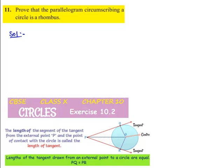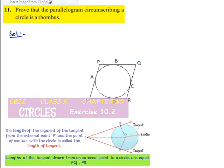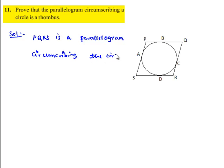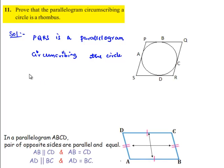Let us consider a parallelogram PQRS circumscribing a circle, where the circle intersects the parallelogram at four points A, B, C, D respectively. Since PQRS is a parallelogram, opposite sides are parallel and equal. Therefore, PQ equals SR and PS equals QR.